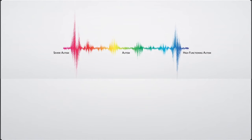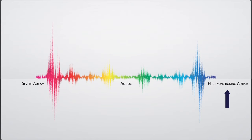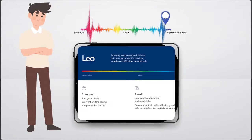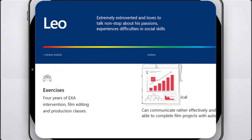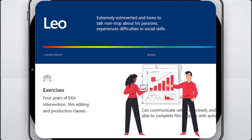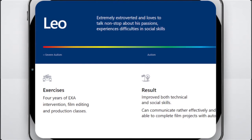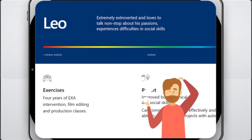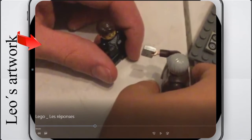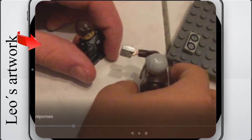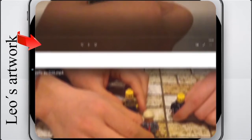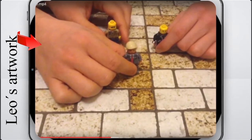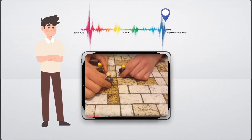Two cases of ASD individuals who are high-functioning on the spectrum have also been illustrated: Leo and Irene. Leo, who is extremely extroverted and loves to talk non-stop about his passions, experiences difficulties in social skills. This includes his struggle to regulate the amount of information he shares about his projects and checking whether the other person is interested. He displays limited reciprocity and finds himself misinterpreting humor, unable to read emotions or intentions properly. Leo improved both his technical and social skills. He has integrated new creative resources and puts them into practice with autonomy. Despite his social anxiety difficulties, he has progressively been able to share with new people and engage in different creative workshops outside of his home after several years of expressive arts therapy intervention.